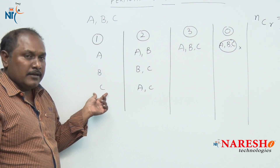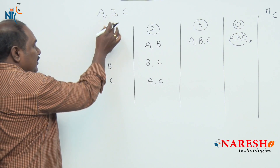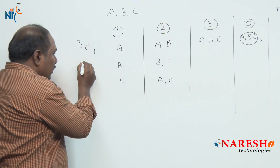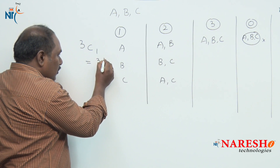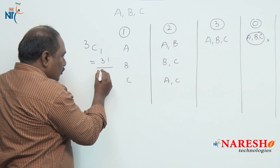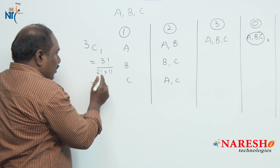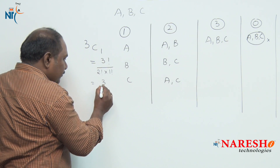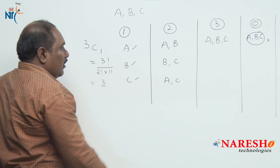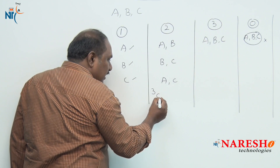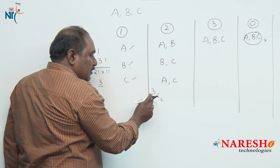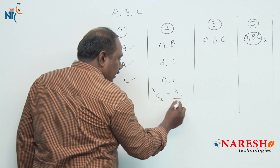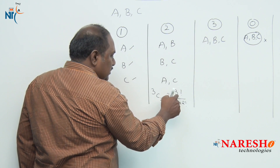Coming back to this example: out of three friends we are selecting one, so it can be done in 3C1 ways. According to the formula, 3C1 equals 3 factorial divided by 2 factorial into 1 factorial, which is 6 divided by 2, giving 3 — and we can see the three different ways: A, B, C. Out of 3 friends we select 2, which is 3C2 = 3 factorial divided by 1 factorial into 2 factorial = 6 divided by 2 = 3.